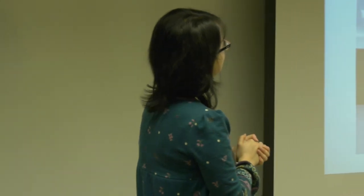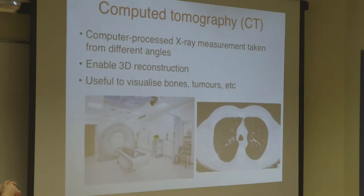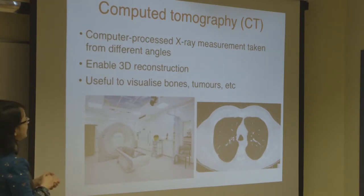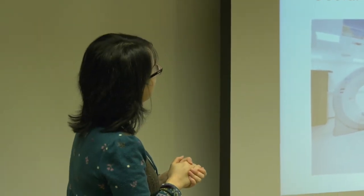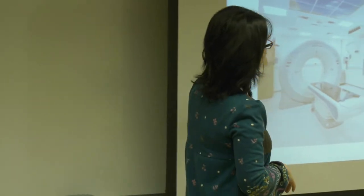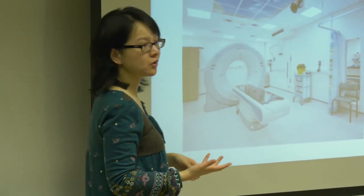A brief introduction about CT: it stands for computed tomography. Nowadays most new CT scanners are dual energy systems, meaning they can emit two different types of energies, giving additional contrast to see certain things like fatty tissues. It enables 3D reconstruction of different slices and is useful to visualise bones and tumours traditionally, with upcoming features allowing visualisation of fatty tissues as well.